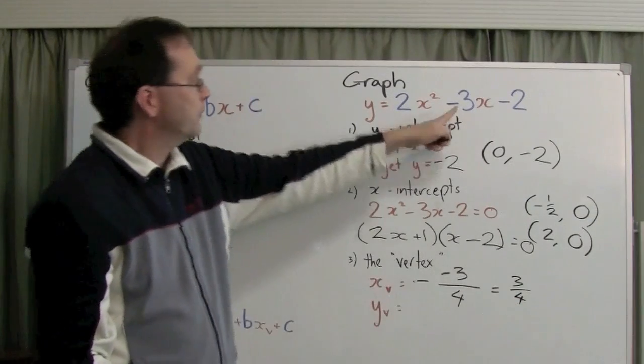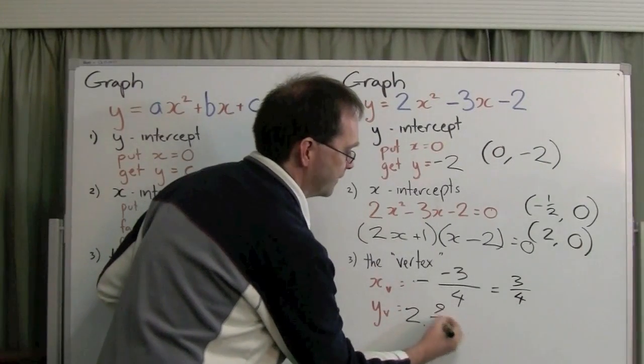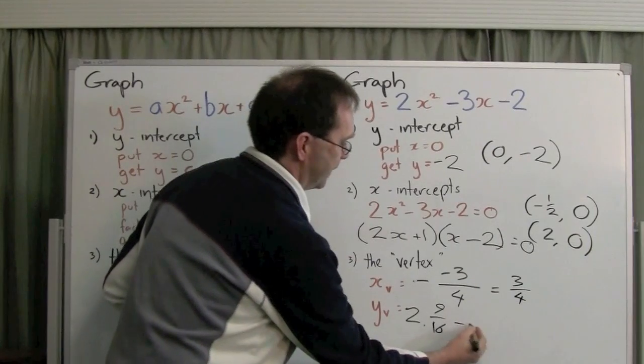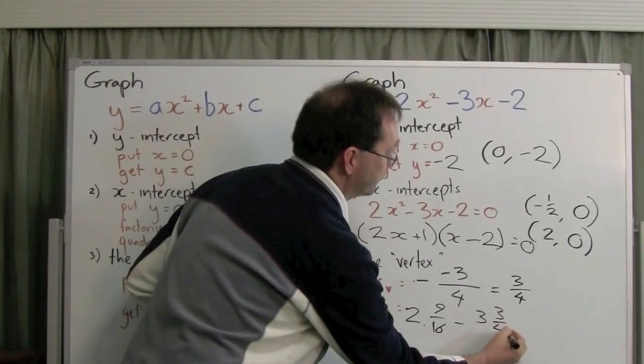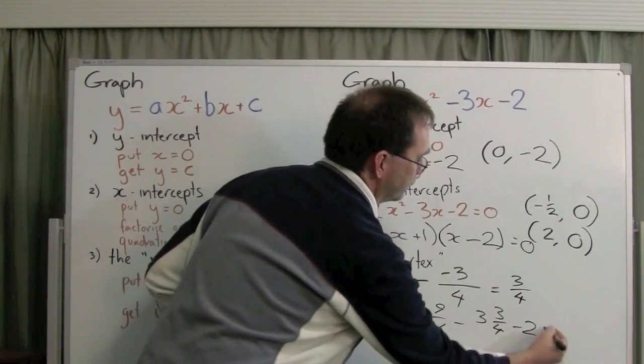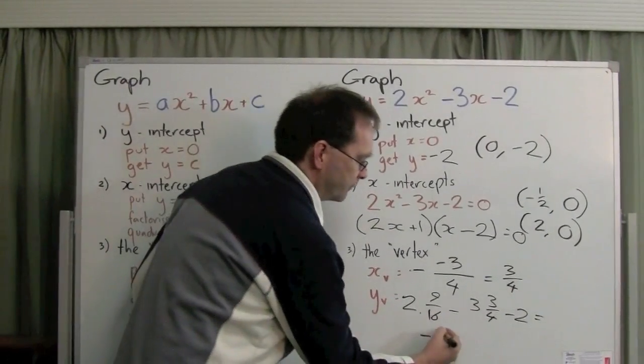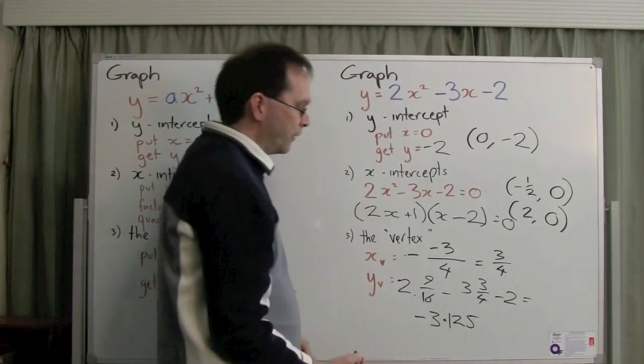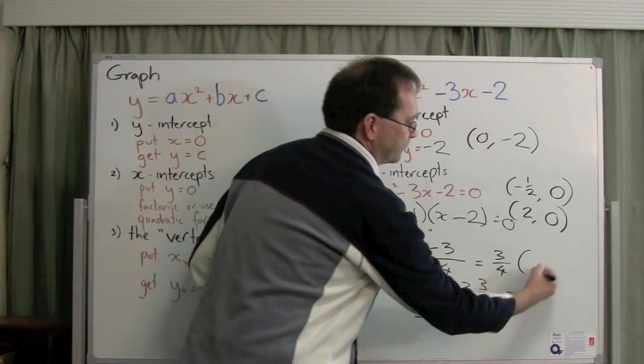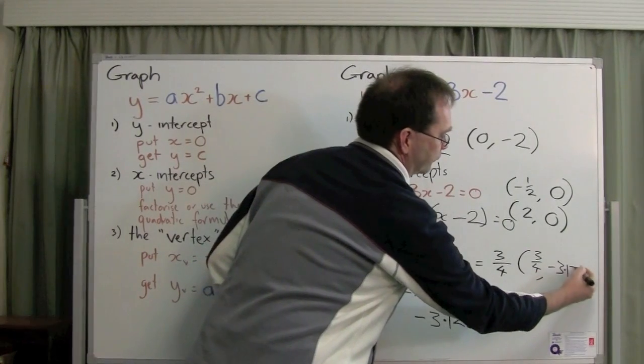And if you take this x and work out y, that's 2 times 9 sixteenths, minus 3 times 3 quarters, minus 2. Well, that turns out to be minus 3.125. So, the vertex is 3 quarters, minus 3.125.